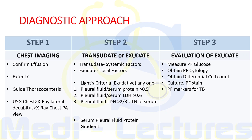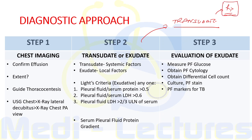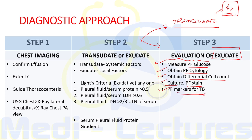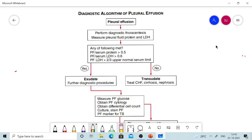We differentiate transudate from exudate because if the fluid is transudative, we only need to treat the underlying cause and the effusion will subside by itself. If the fluid is exudative, we must perform additional evaluation including measurement of pleural fluid glucose, cytology, differential cell count, culture and staining, and markers for tuberculosis, to identify the exact cause from the variety of conditions causing exudative pleural effusion.